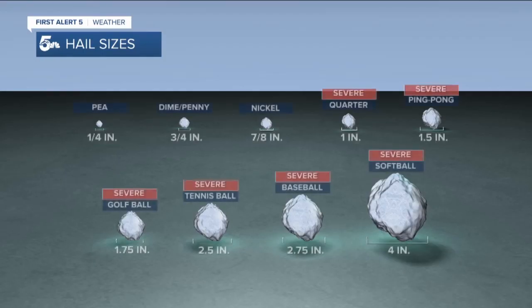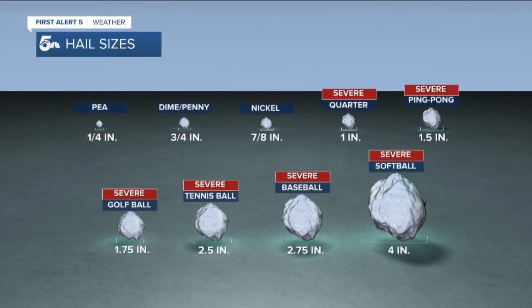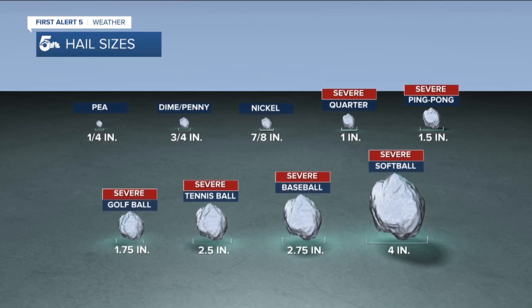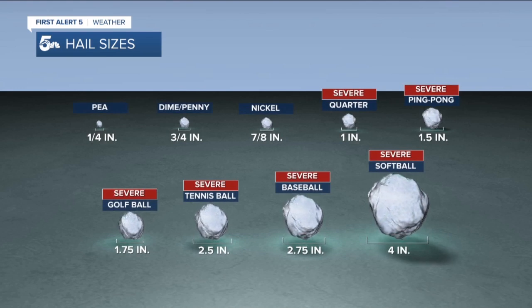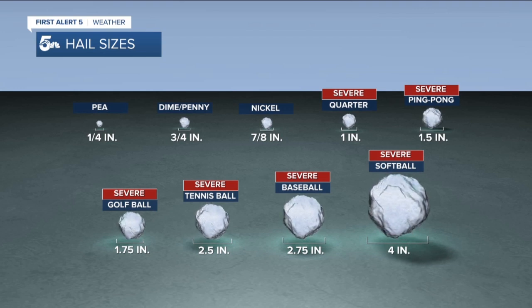When measuring hail we can use a ruler or a referenced size to a common object. Pea sized hail is a quarter inch in diameter. Golf ball sized hail is 1.75 inches in diameter. A severe thunderstorm warning will be issued if radar imagery indicates a hail size of one inch in diameter or greater, or the size of a quarter.